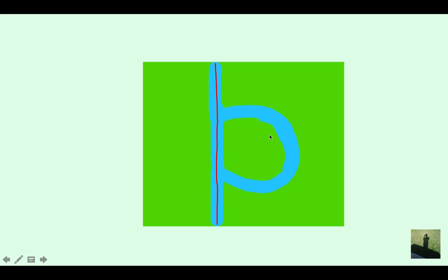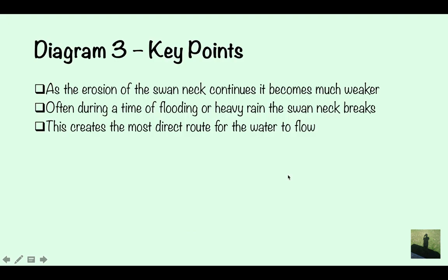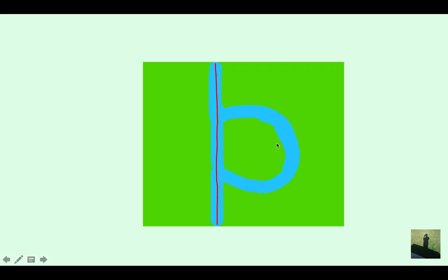Here's your next diagram. The key points here is that as the erosion of the swan necks continue, it's become much weaker. And then often during the time of flooding or heavy rain, the swan neck's broken. So it becomes so weak here, that all it's taken is a period of heavy rain or flooding and that's just broken away. It's created the fastest route for the water to flow through.